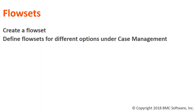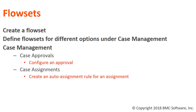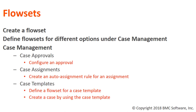Then we will go through different options under case management and define flow sets for different options. In case approvals we will see how to configure an approval. In case assignments we will see how the case gets assigned to a particular department and assignee when an auto assignment rule is set. In case templates we will see how to define a flow set for a case template and then see the example of how the case progresses through different status transitions.